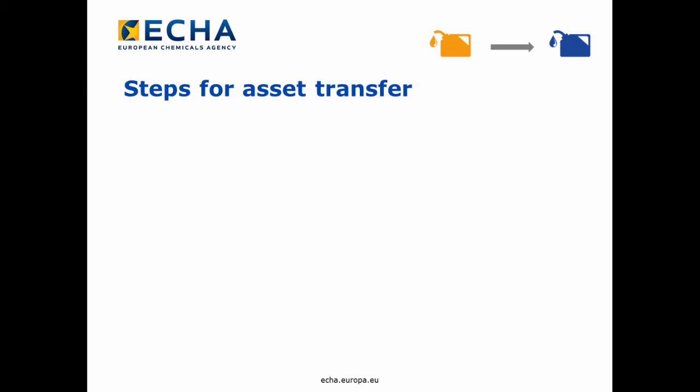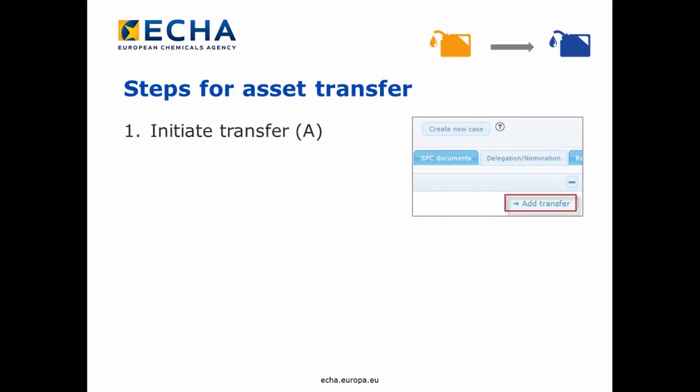There are essentially four steps which take place during an asset transfer. Company A initiates the transfer by tagging the respective asset in the delegation nomination tab in the asset details in R4BP3.